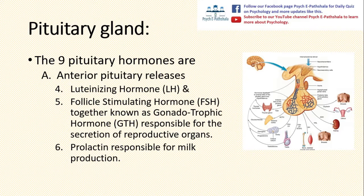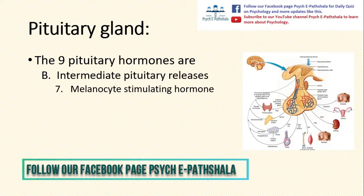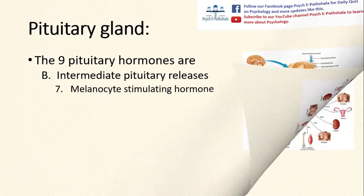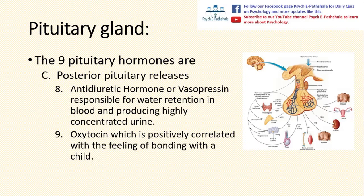The sixth hormone released from the anterior pituitary is prolactin, which is responsible for milk production in human females. From the intermediate part of the pituitary, melanocyte stimulating hormone is released. From the posterior part of the pituitary, antidiuretic hormone or vasopressin is released, which is responsible for water retention in blood and producing highly concentrated urine. The last hormone secreted by the posterior pituitary is oxytocin, which is positively correlated with the feeling of bonding with a child.